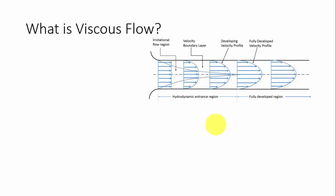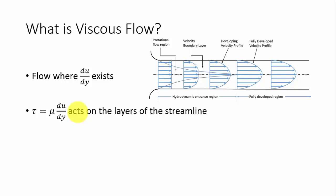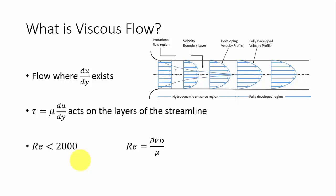First of all, we need to know what laminar flow or viscous flow is. Viscous flow and laminar flow are both the same. A flow where du/dy exists — that is, change in velocity with respect to the y direction — is the first condition. Second, viscous flow is a flow where the shear stress equals mu times du/dy; Newton's law of viscosity acts on the layer of streamlines. The Reynolds number should be less than 2000 — in some cases 3000 — to discriminate laminar from turbulent flow. If it is less than 2000, it will surely be laminar or viscous flow. The Reynolds number is calculated using the formula rho·v·d divided by mu.